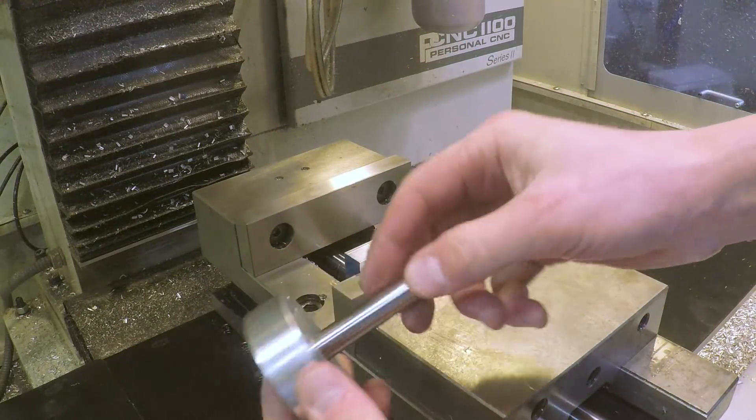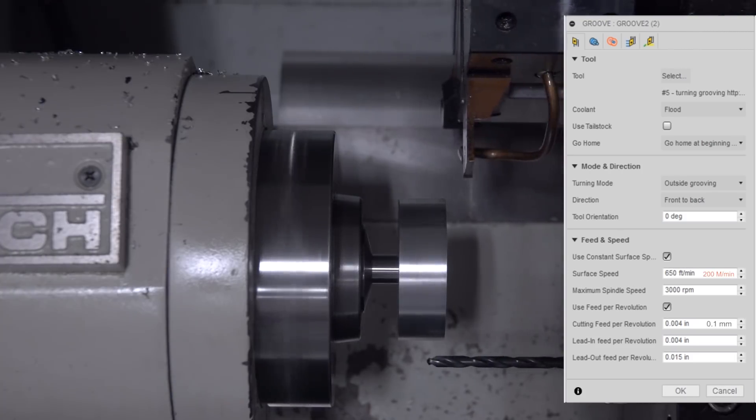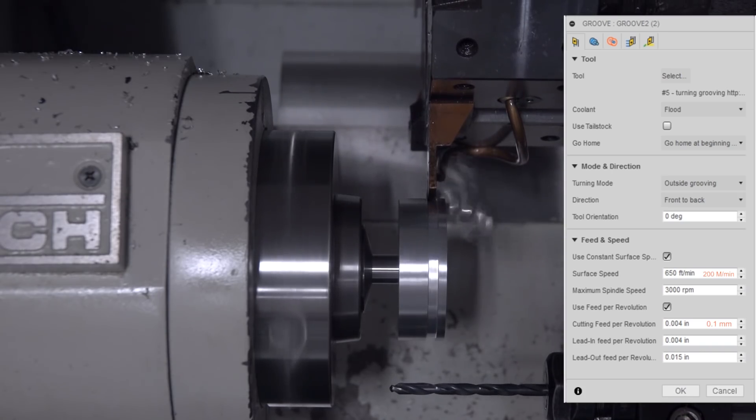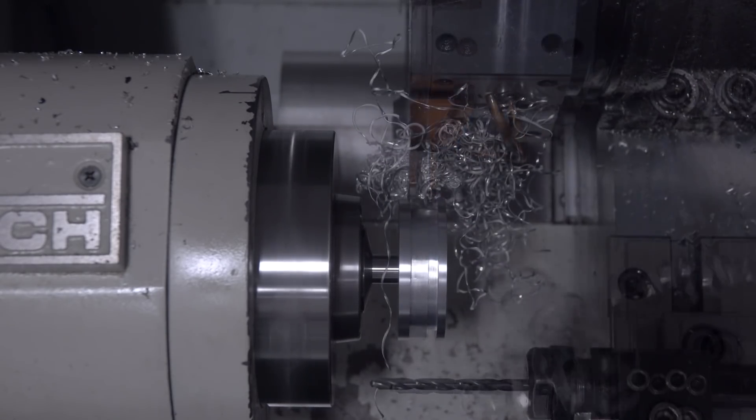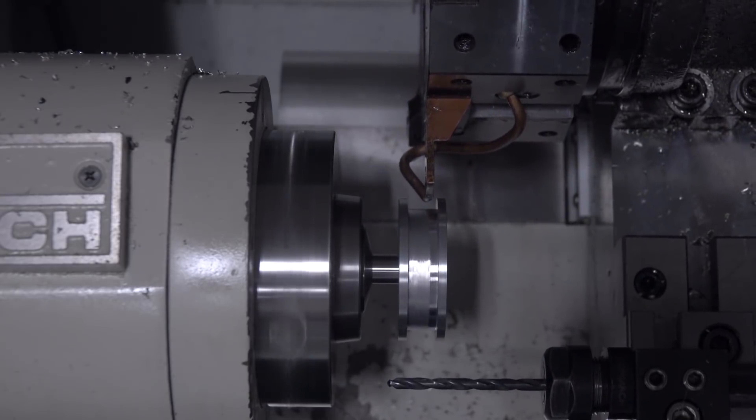Now we'll head over to the Slant Pro. Running at 650 surface feet per minute, cutting at 0.004 per rev. It wouldn't be an NYC CNC video if there wasn't some bird's nesting on the lathe. And joking aside, I didn't want it here, but I would actually love some legitimate help.